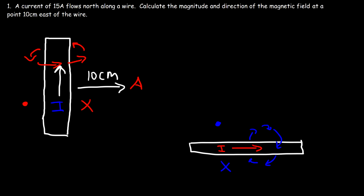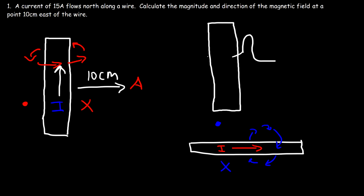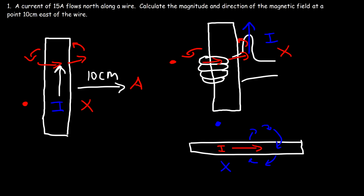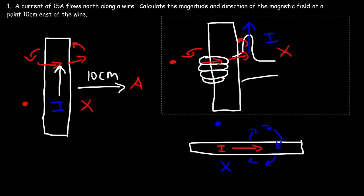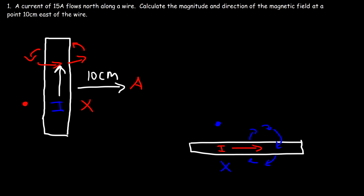For those having trouble with the right-hand rule, you can visualize it this way: point your thumb in the direction of the current and curl your fingers around the wire. Here's the direction of the current — notice that your fingers behind the wire curl in this direction. So it's out of the page on the left and into the page on the right. Hopefully that visual illustration helps.